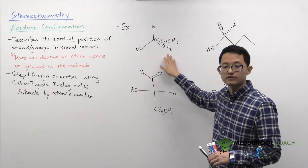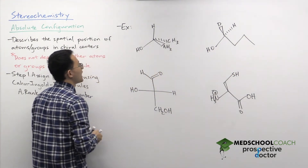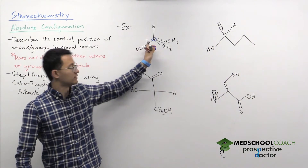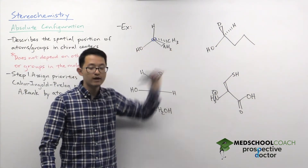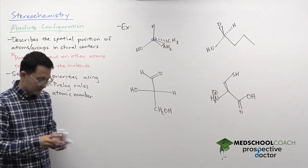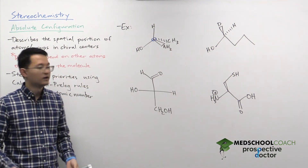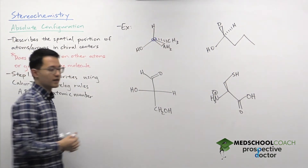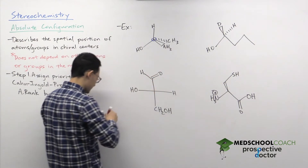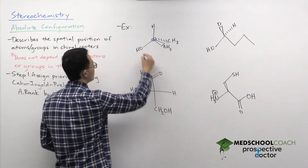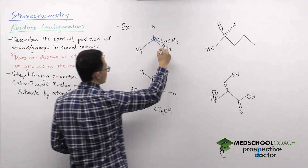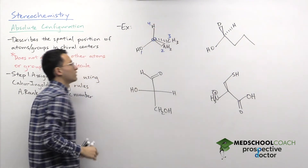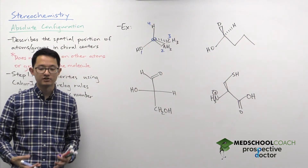Let's take a look at an example. Here we've got a molecule on the top left, and right in the center we have our chiral center. This atom is bound to four different substituents: a hydrogen, a hydroxyl, an amine, and a methyl. Assigning priority by atomic number, we look at oxygen, nitrogen, carbon, and hydrogen on the periodic table. Oxygen has the greatest atomic number, so it's priority number one; nitrogen is two; carbon is three; and hydrogen is four because it has the smallest atomic number of just one.